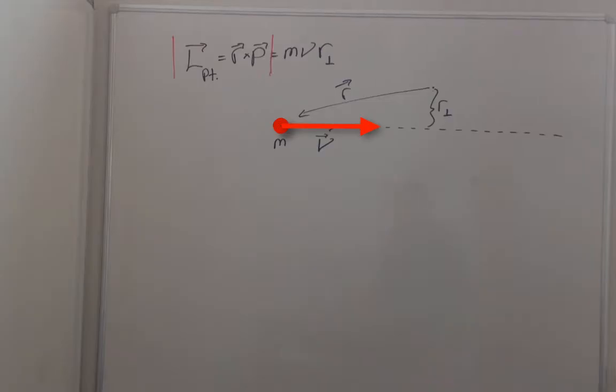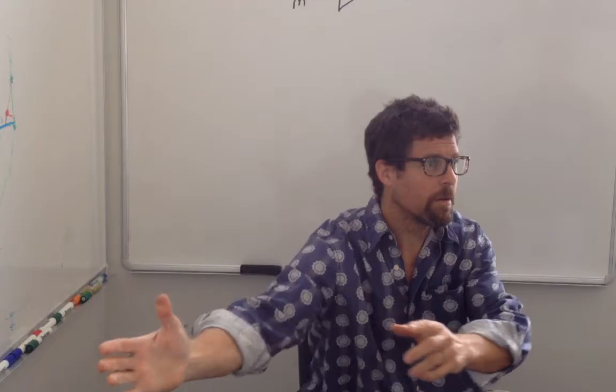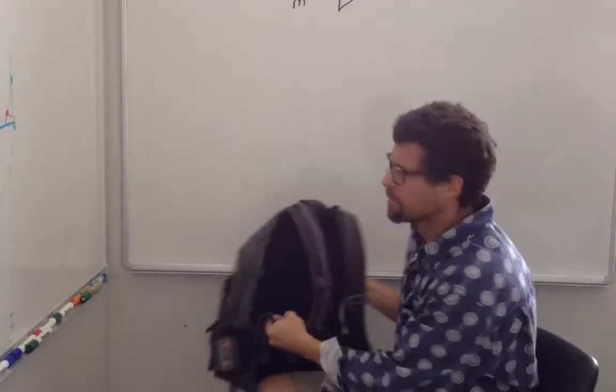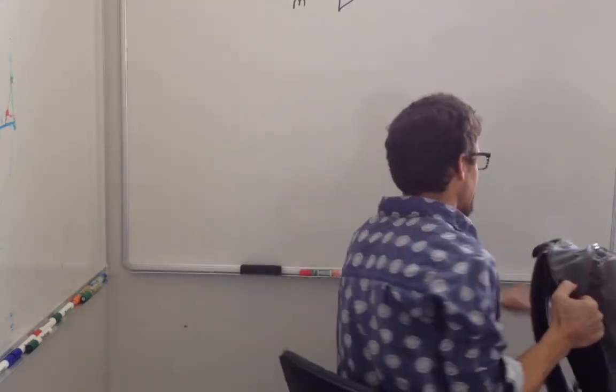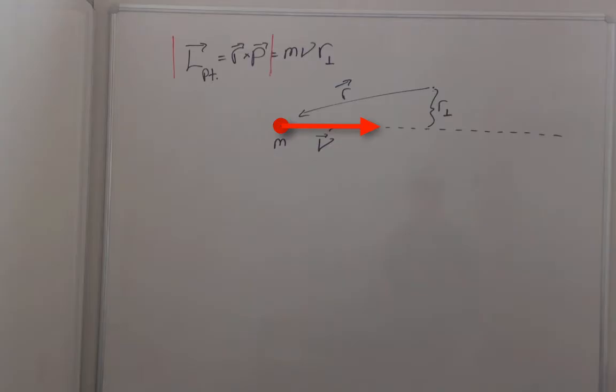And we know it can because if it hits me off-center, it will cause me to rotate, and so the angular momentum must have come from the mass itself.